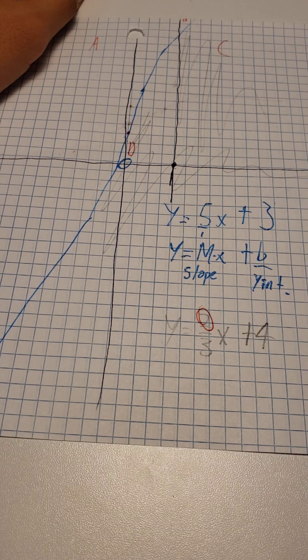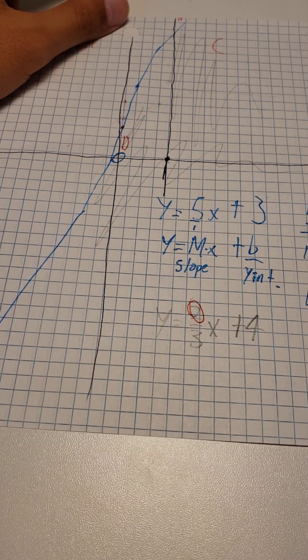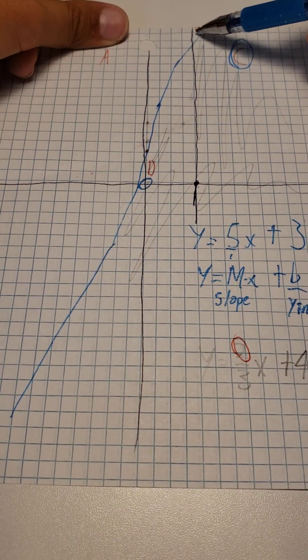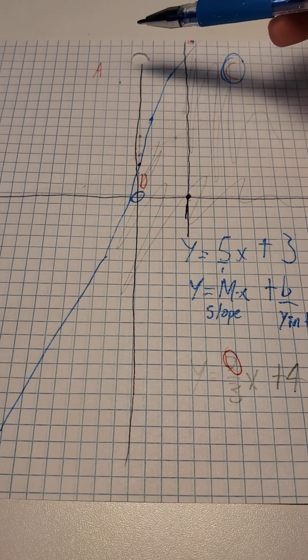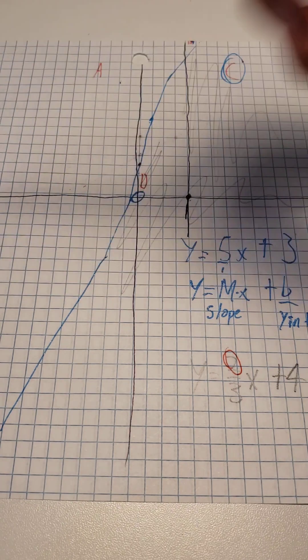you can say that C is going to be the correct quadrant because B is before the blue line, A is all the way over here, and D does not match up with the equation.